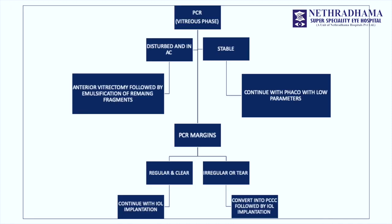When you have a PCR, if it is a punched-out kind with clear margins, then you have to very carefully put in viscoelastic before withdrawing your probe and remove your fragments if there is no vitreous. If there is vitreous in the anterior chamber, it is better to deal with the vitreous and do an anterior vitrectomy before attempting to remove the fragments. If the PCR is irregular and there is a tear, it is better to convert it into a PCCC with strong margins so that it does not run off.